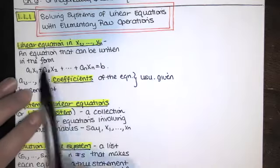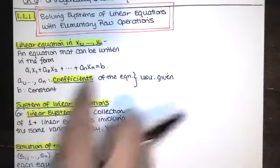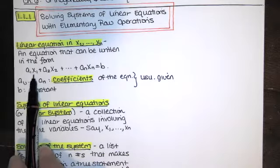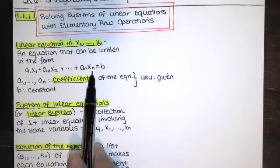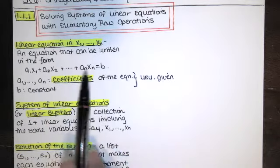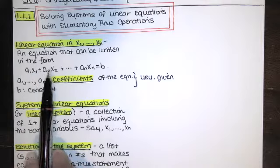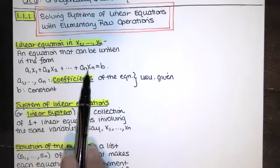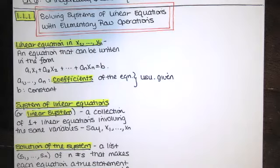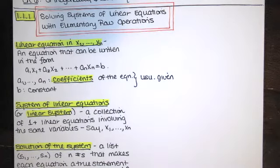First, we have a definition. A linear equation in the variables X₁ through Xₙ is an equation that can be written in the form: a₁X₁ + a₂X₂ + a₃X₃ + ... + aₙXₙ = b. The subscripts just tell you which variable they're multiplying — a₂ multiplies X₂, aₙ multiplies Xₙ. The constants a₁ through aₙ are called the coefficients, and the constant on the right-hand side is called b. These are usually given to you.